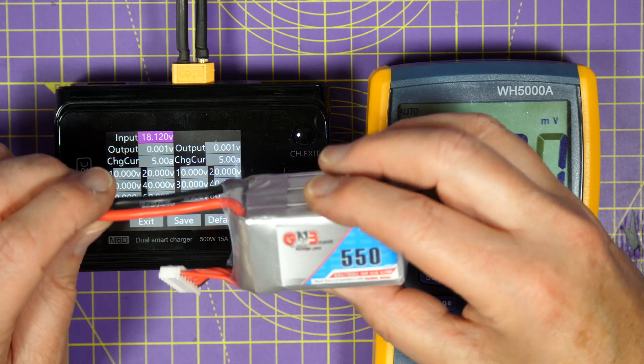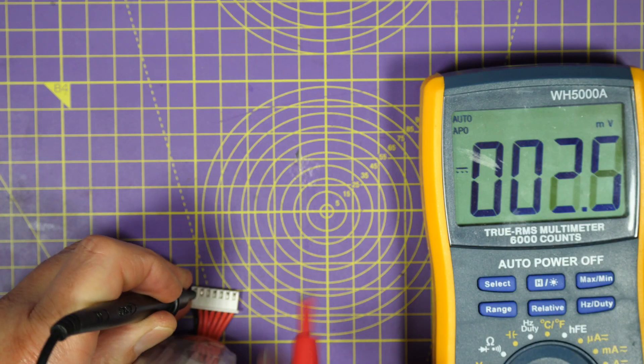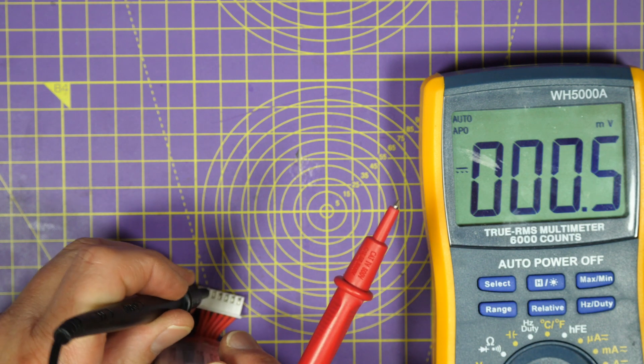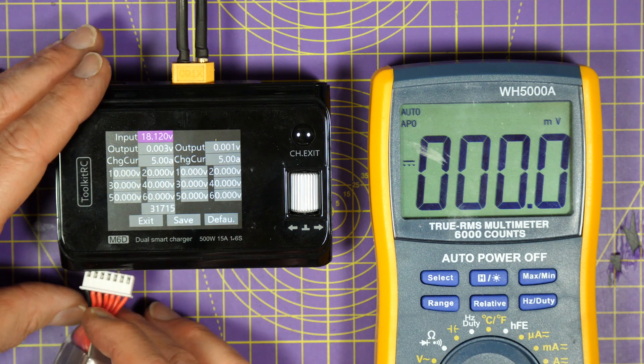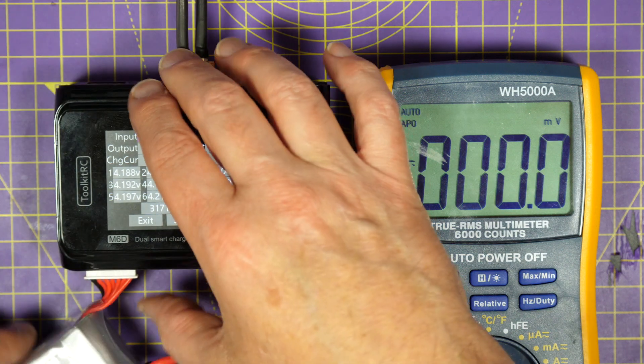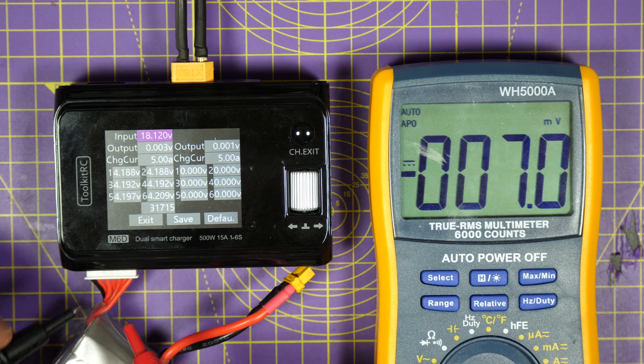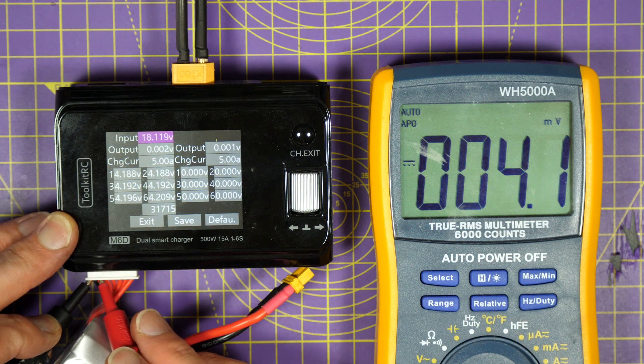Now what you could do is measure each of these cells on the JST connector here and write down the voltage that you get on your multimeter. But I find an easier way to do this is just to plug your battery in and carefully measure across the pins here. Be very careful not to short them out.